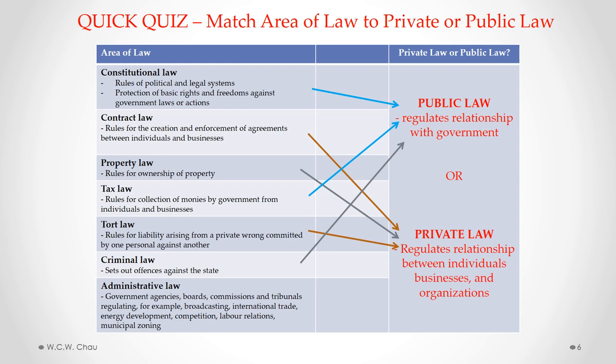The last area of law is administrative law. Administrative law consists of rules that the government has set to regulate business using government agencies, boards, commissions, or tribunals. Some of the areas that administrative law regulates include broadcasting, international trade, energy development, competition, labor relations, and municipal zoning. Administrative law is considered to be public law.